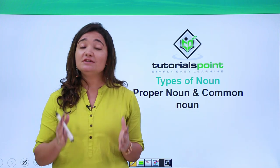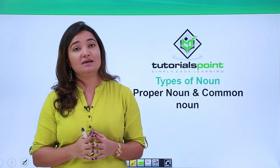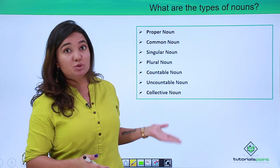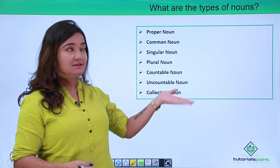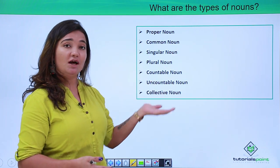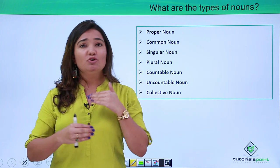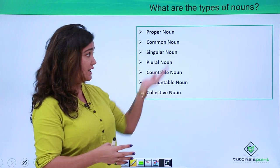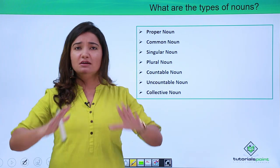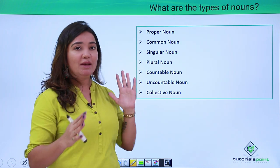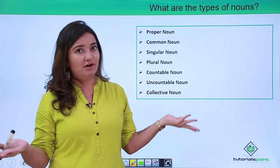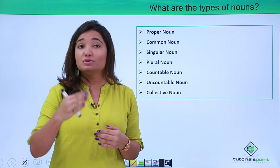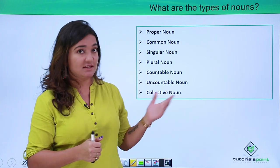Let us first see the different types of nouns in the English language. It's a huge list: proper, common, singular, plural, countable, uncountable, collective. As we go forward, we will study in detail about each of these types. For now, don't get confused — just go through the names.